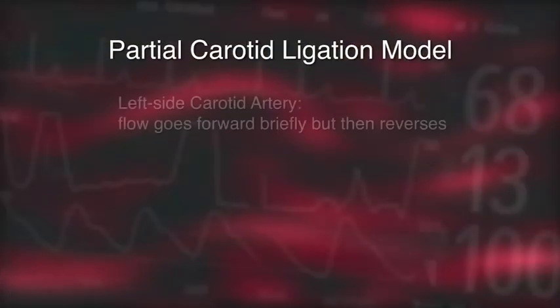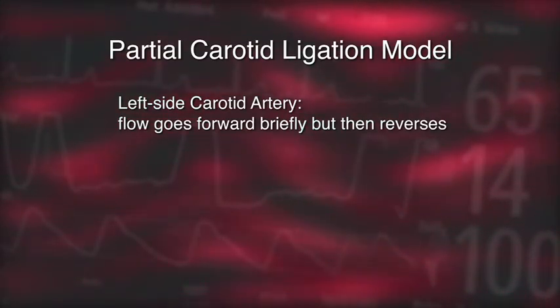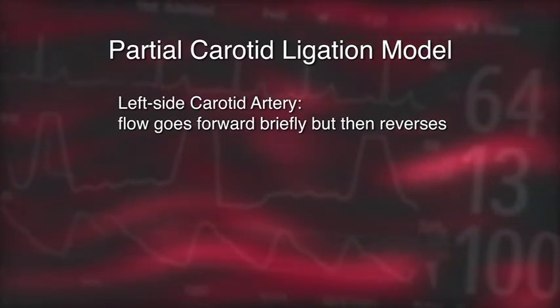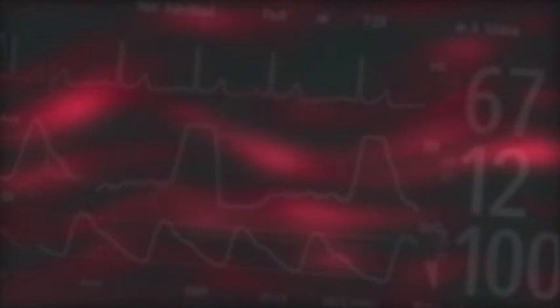Once we perform the partial ligation surgery, this induces flow disturbance in the left side only. Flow goes forward briefly but goes backward throughout the cardiac cycle. This is in contrast to the right side, where flow goes forward at each cardiac cycle unidirectionally.